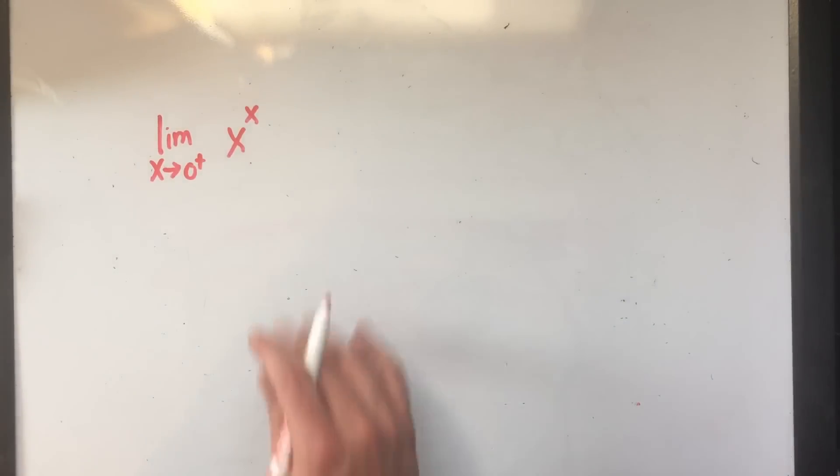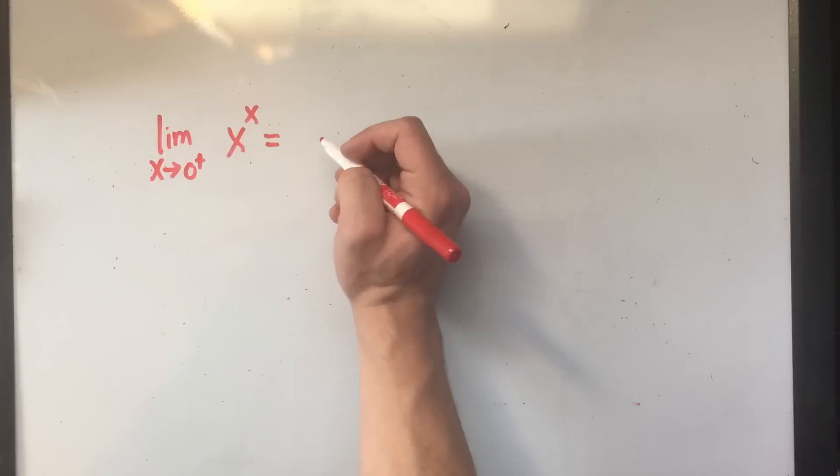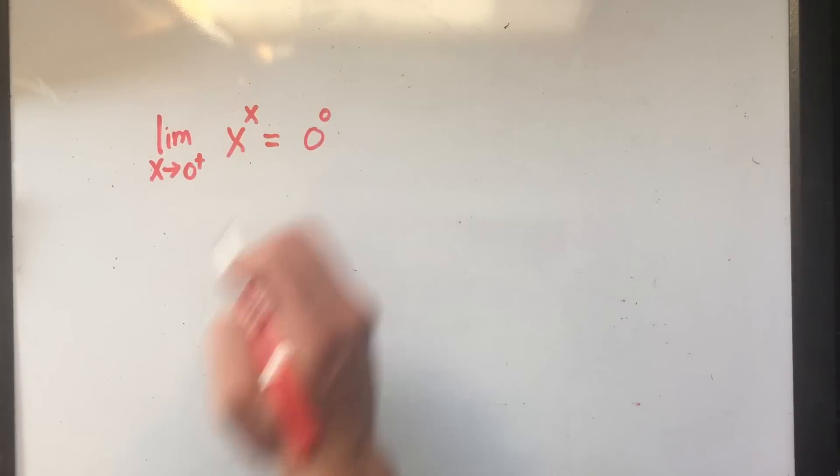Whenever I have a limit, I like to just plug in the number and see what happens. So if I plug in zero for x, that would be zero to the zero power.